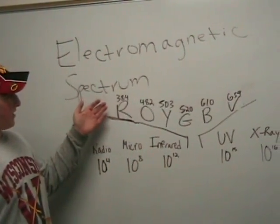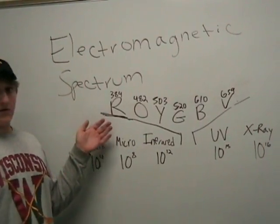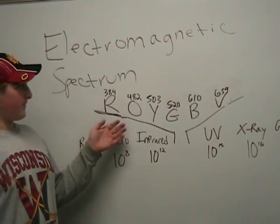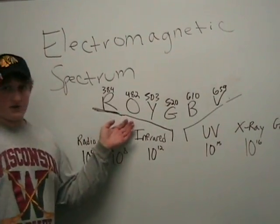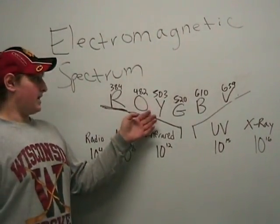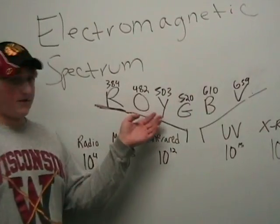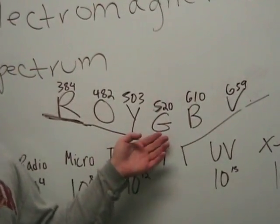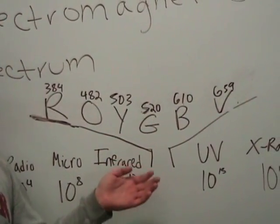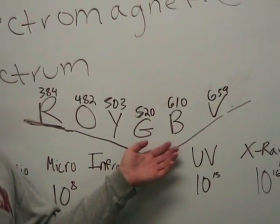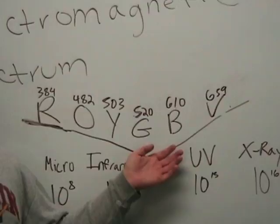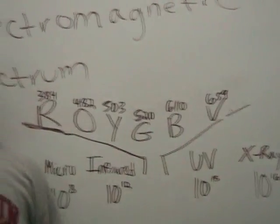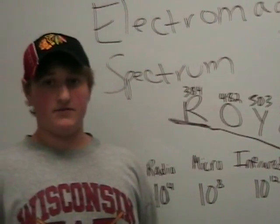For visible light, starting with red at around 384 terahertz, orange is around 482 terahertz, yellow is 503 terahertz, green is 520 terahertz, blue is 610 terahertz, and violet is 659 terahertz.